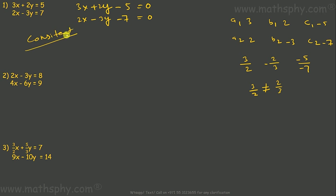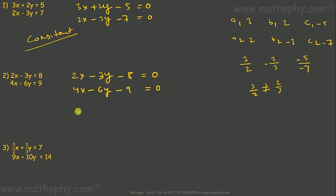As stated, intersecting and coincident lines are both consistent; only parallel lines give inconsistent solutions. Second pair: 2x - 3y - 8 = 0 and 4x - 6y - 9 = 0. Here a1/a2 = 2/4 = 1/2, b1/b2 = -3/-6 = 1/2, c1/c2 = -8/-9 = 8/9. Since a1/a2 equals b1/b2 but not c1/c2, this gives parallel lines — the system is inconsistent.